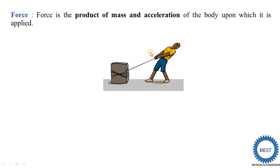Sometimes we are pushing the body — that is also called force. So force is either a pull type or a push type. Here this human being is pulling this body, and this body has a certain mass M. When this body starts to move, it moves with a certain acceleration.